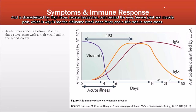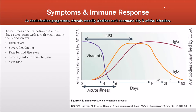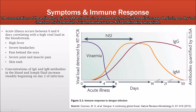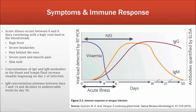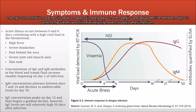Acute illness occurs between zero and six days of infection when there is a high viral load in the bloodstream, and is characterized by high fever, severe headaches, pain behind the eyes, severe joint and muscle pain — which is why it has the nickname break bone fever — and skin rash in some cases. As the infection progresses, viremia steadily declines to zero at five days. The concentration of antibodies IgG and IgM in the blood and lymphoid fluid steadily increases beginning at the onset of infection, as a result of viral molecules such as the NS1 protein being recognized. The IgM concentration plateaus between 7 to 14 days and then declines to undetectable levels at around 50 days. IgG concentration reaches its peak at around day 12, then gradually declines, staying relatively high even 50 days after infection.